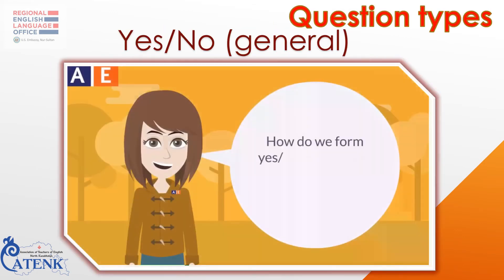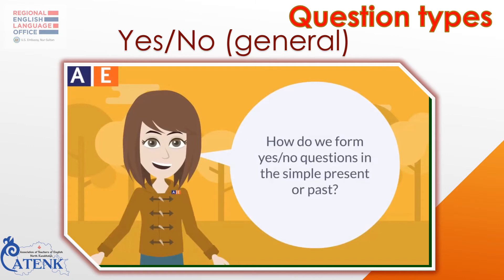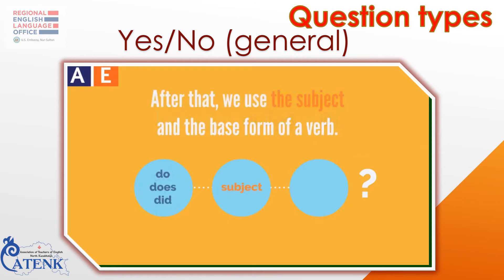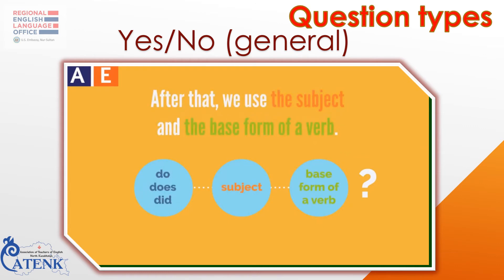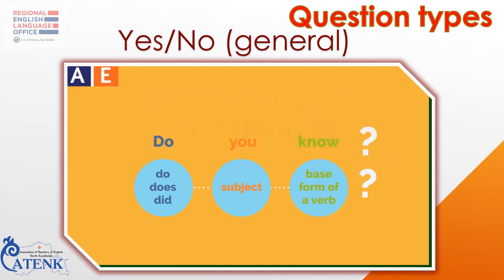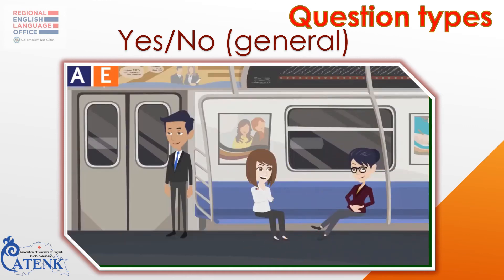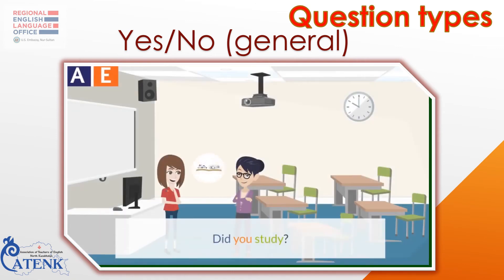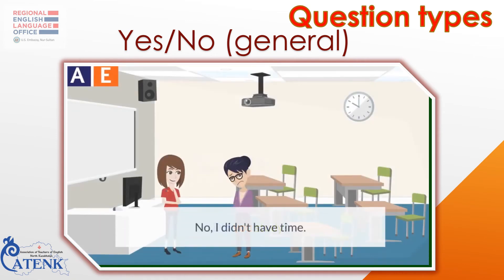How do we form yes or no questions in the simple present or past? First, we use do, does, or did. Do and does are for the simple present and did is for the simple past. After that we use the subject and the base form of a verb. For example: 'Do you know the time?' — 'Yes, I do.' 'Did you study?' — 'No, I didn't have time.'